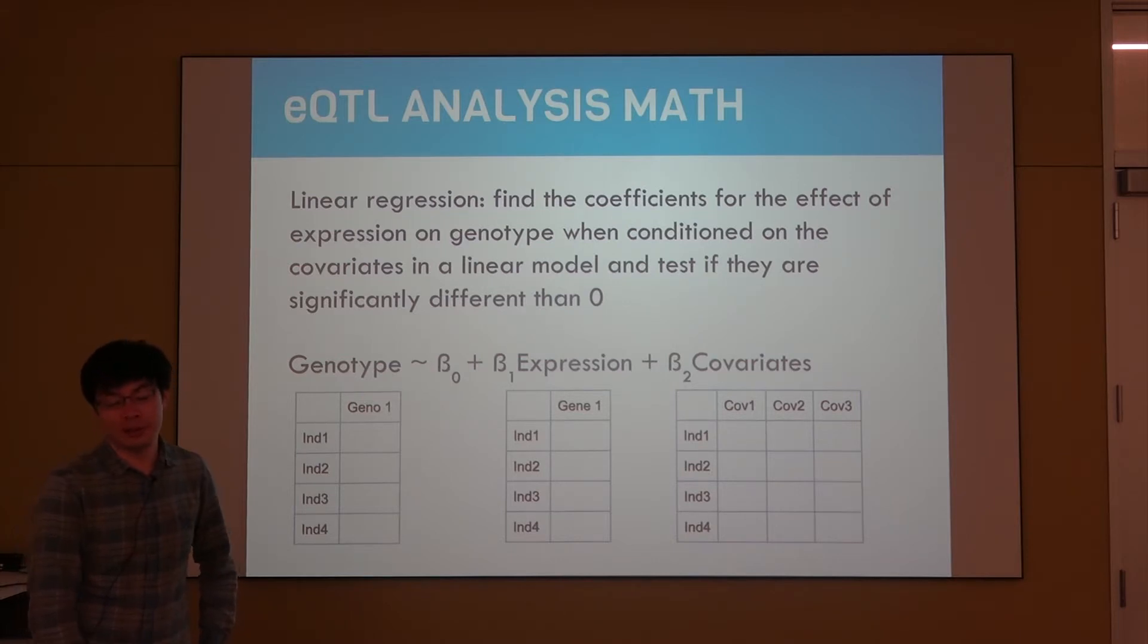Yes, so the question was that sometimes the expression is flipped to the other side where the genotype is on the side of the covariates and the expression is the outcome. That's very common as well, and I think it just depends on what exactly you include as covariates and which side you want it to be. Thank you.